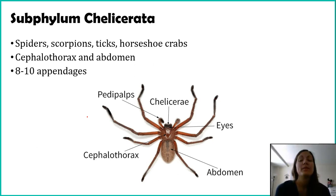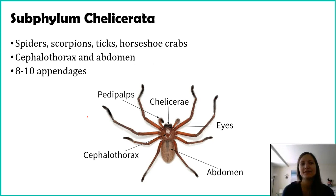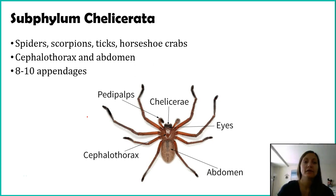One more subphyla to talk about. There are quite a few other subphyla, but I'm focusing on the ones you're familiar with — maybe not the name, but definitely the organisms. The last subphylum we'll talk about is subphylum Chelicerata, which includes probably your favorite: spiders. But not just spiders — scorpions, ticks, and oddly, horseshoe crabs. Horseshoe crabs aren't actually crabs; they're more related to spiders but called crabs. This is what happens when we name organisms before knowing where they fit phylogenetically.